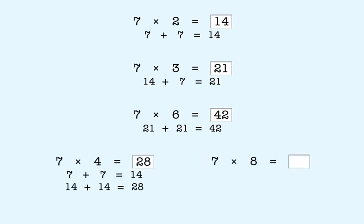To multiply seven times eight, we double twenty-eight and we get fifty-six.